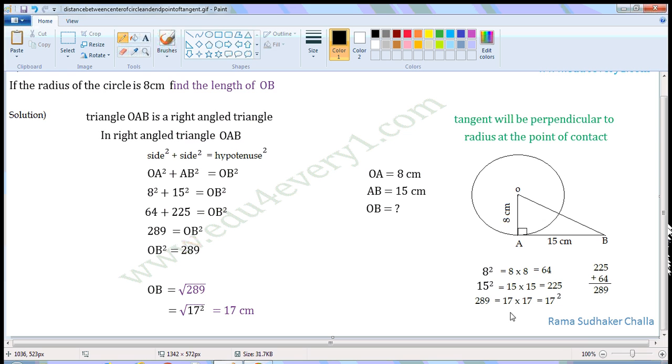289 is 17 × 17, so we can write it as 17². So we can write √289 as √(17²). Now root and square get cancelled, so this will be equal to 17. So the length of OB is 17 cm.